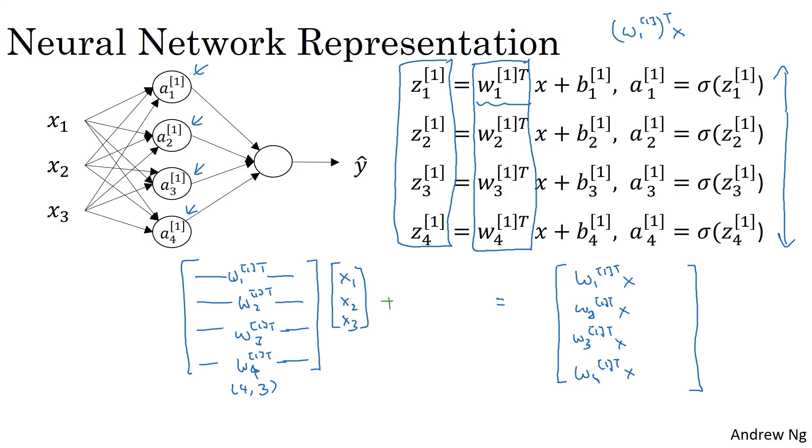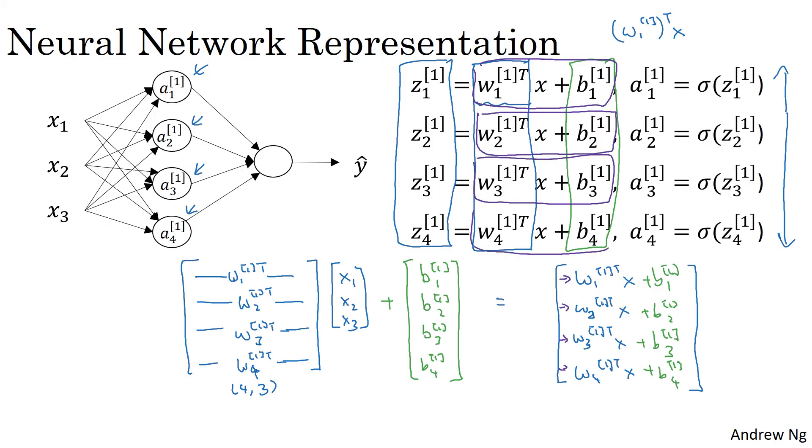And then let's not forget the b's. So we now add to this a vector b11, b12, b13, b14. So that's basically this. Then this is b11, b12, b13, b14. And so you see that each of the four rows of this outcome correspond exactly to each of these four rows, each of these four quantities that we had above.